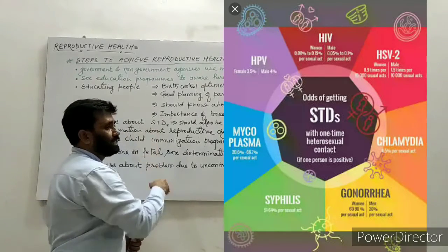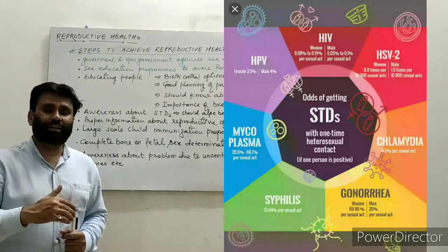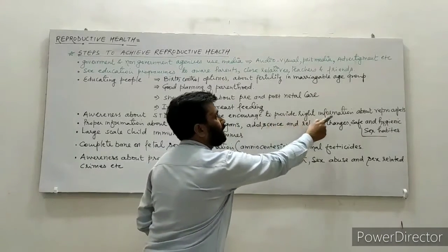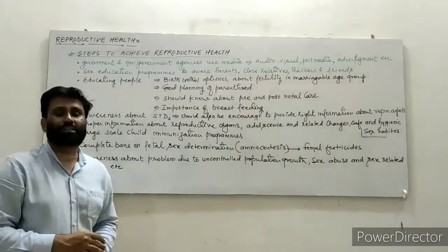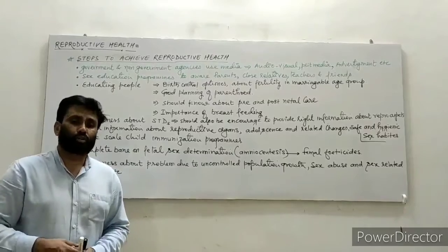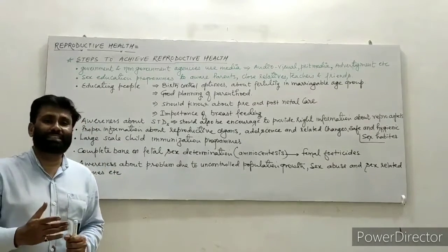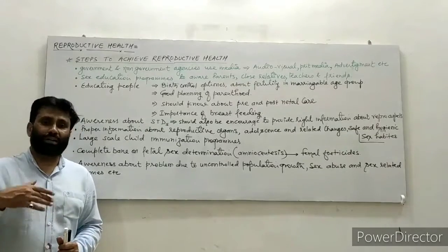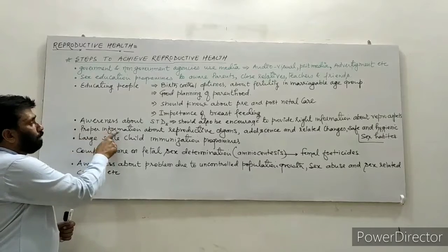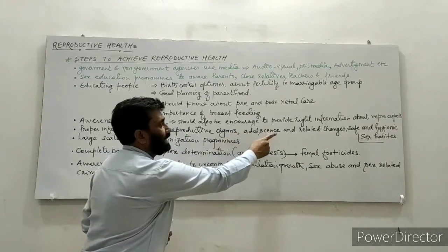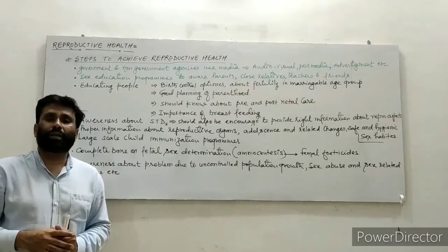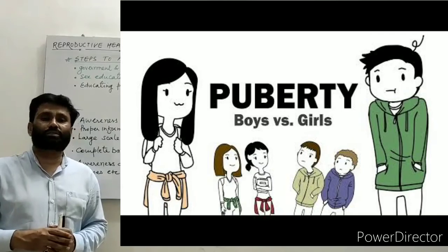Awareness about STDs — sexually transmitted diseases like AIDS, syphilis, gonorrhea, and genital herpes. Right information about reproductive aspects should be increased and spread among younger ones, mature persons, families, and society. People should be given proper information about reproductive organs, adolescent-related changes, and safe and hygienic sexual habits. When a child enters adolescence, puberty changes occur — emotional and hormonal changes happen.